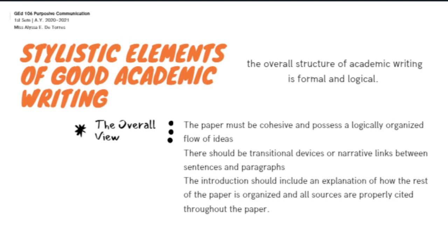Transitional devices are like bridges between parts of your paper. They are cues that help the reader interpret ideas as the paper develops. Transitional devices are words or phrases that help carry a thought from one sentence to another, from one idea to another, or from one paragraph to another. For example, the words and, again, and then, besides, because, yet, still, and so on and so forth. The introduction should include an explanation of how the rest of the paper is organized, and all sources are properly cited throughout the paper.